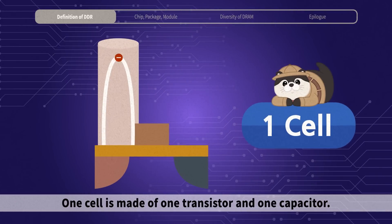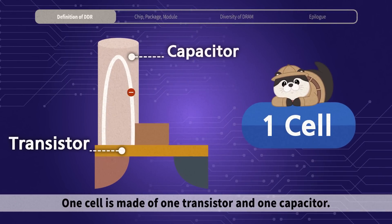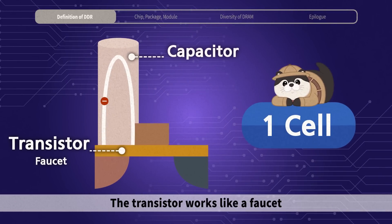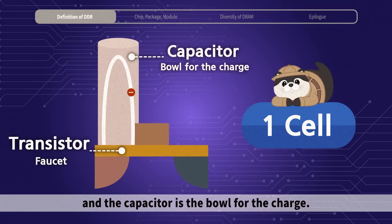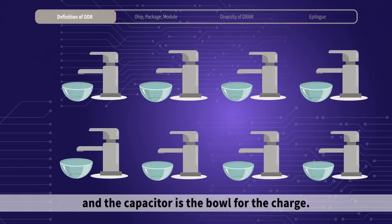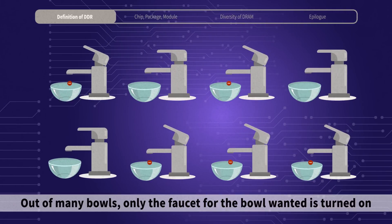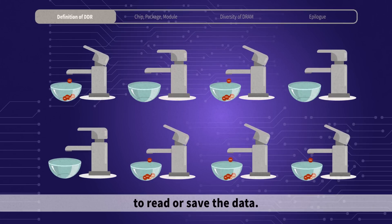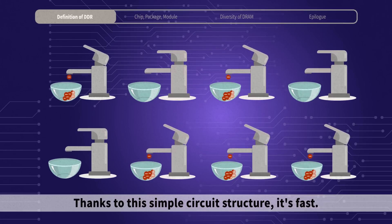One cell is made of one transistor and one capacitor. The transistor works like a faucet, and the capacitor is the bowl for the charge. Out of many bowls, only the faucet for the bowl wanted is turned on to read or save the data. Thanks to this simple circuit structure, it's fast.